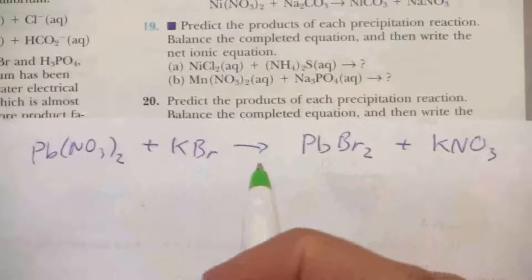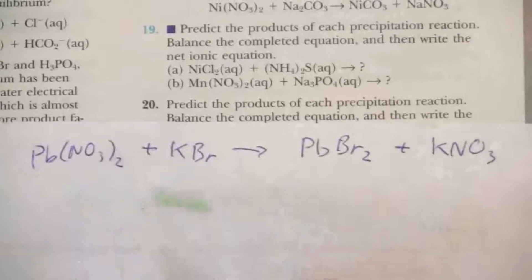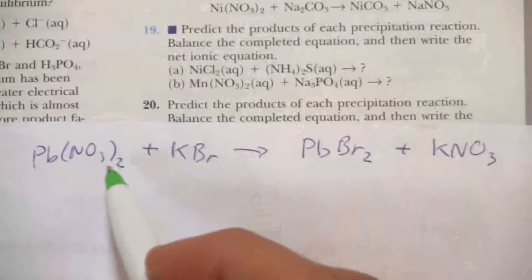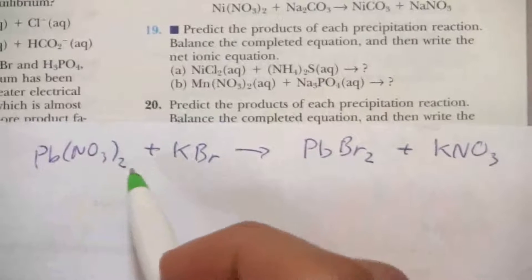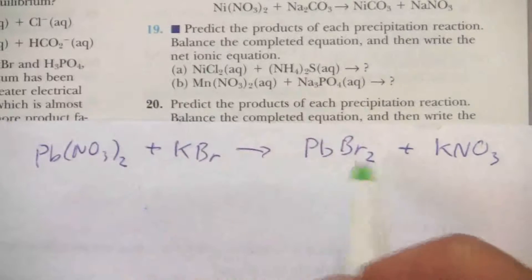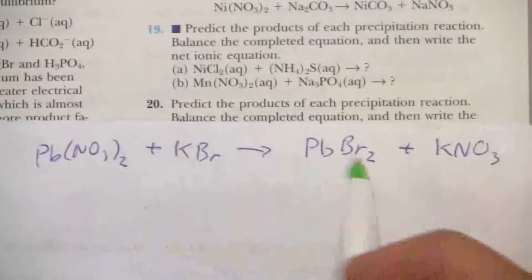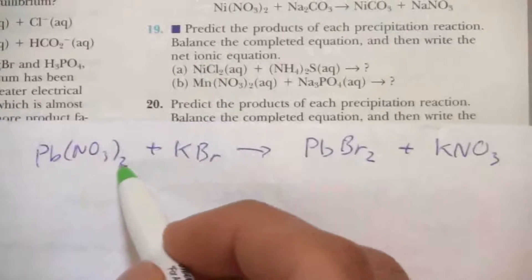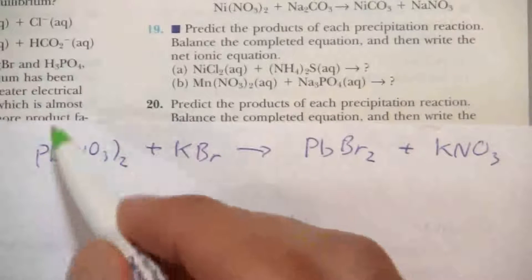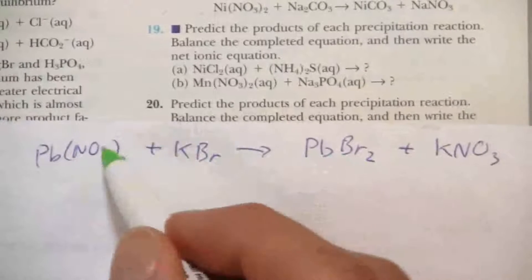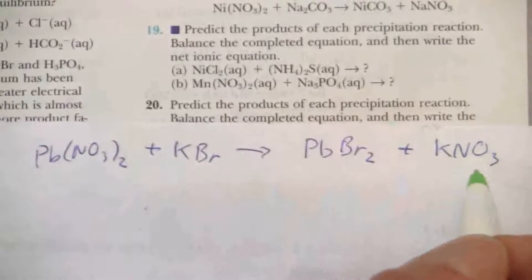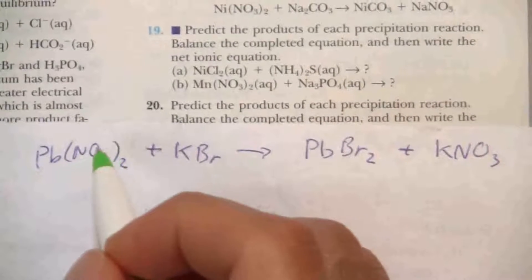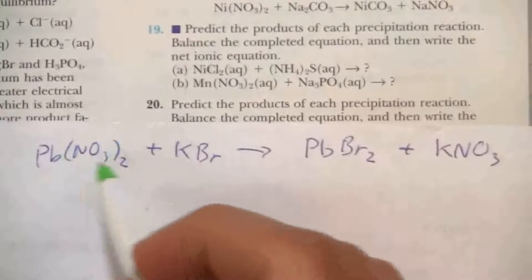And we can now balance this equation. So again, as I've mentioned before, you want to start with the more complicated formulas. It doesn't really matter which one we do here, but we can start with lead nitrate, and we have two nitrates. In these types of double displacement reactions, the nitrate stays over. It's still NO3 over there, so we don't have to balance the nitrogen and then the oxygen. We can balance it as an ion, the nitrate ion.